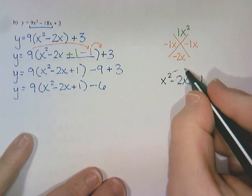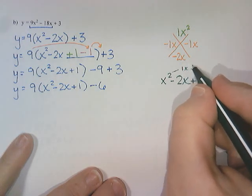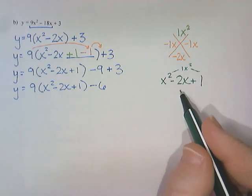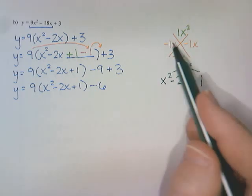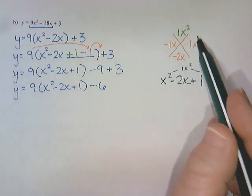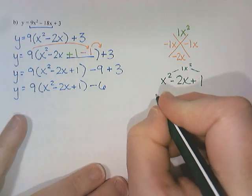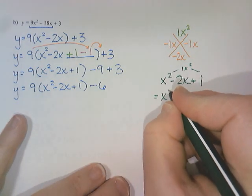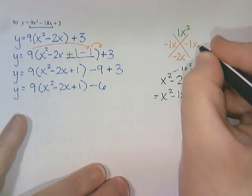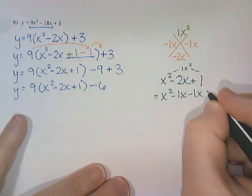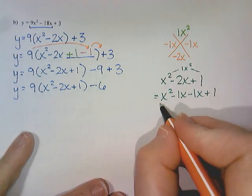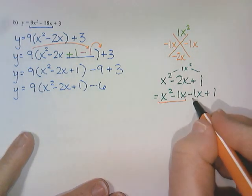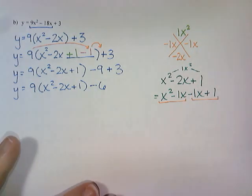And we are going to see if we can factor that. So I am looking for two things that multiply to 1x² and add to -2. I've already worked the numbers out. That was part of my completing the square process. So I can actually just reuse those. So I have x² - 1x - 1x + 1.